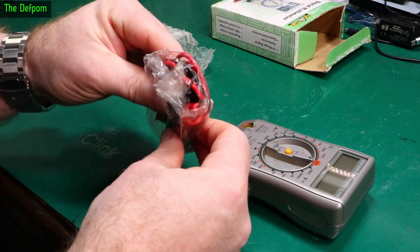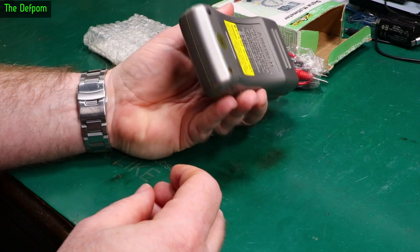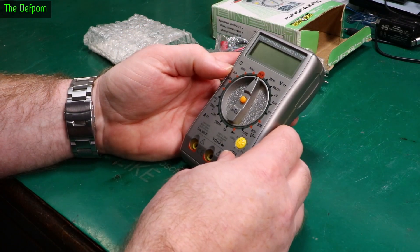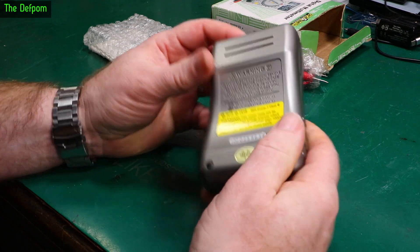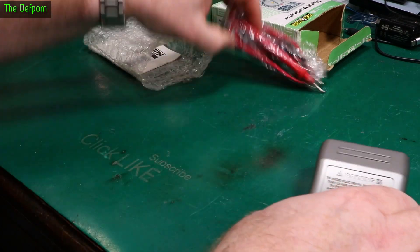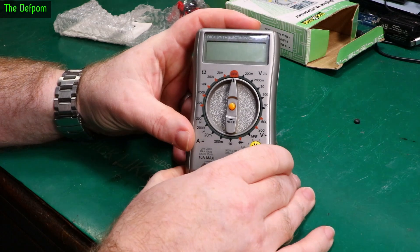It's got its original leads with it still, and I think it might even have the original battery in it still. Let's turn it on, it still works. There's one of the little rubbers missing. The reason I'm doing a video about this particular little multimeter, this is a cheap little multimeter.